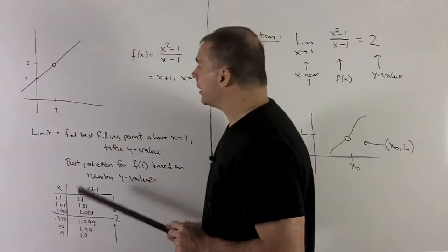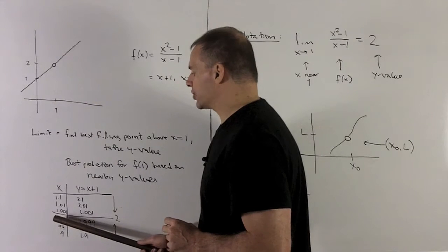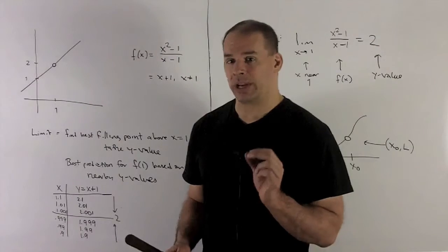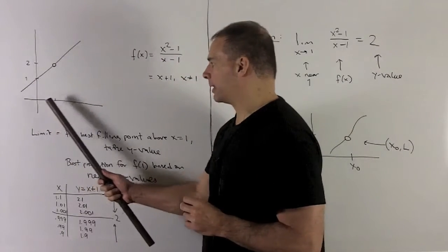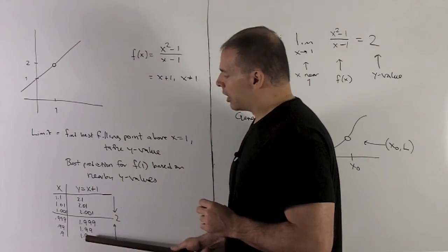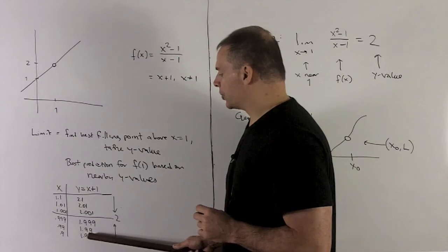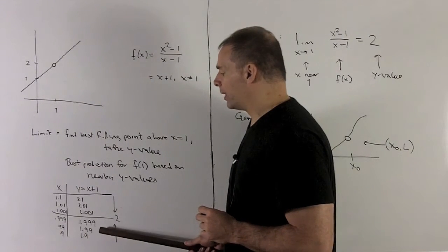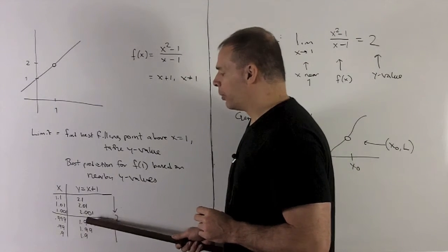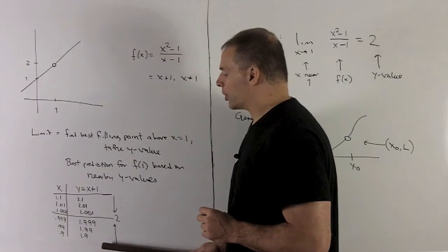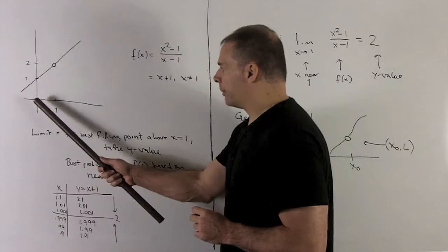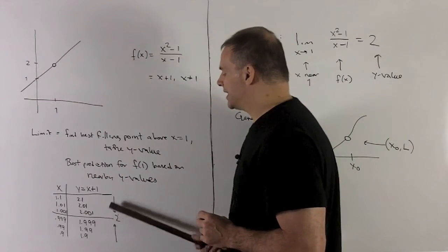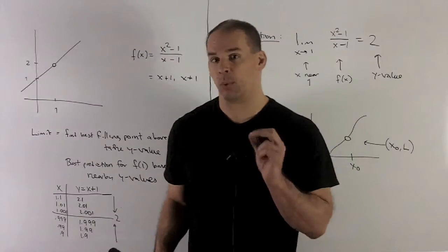On the other side, we get closer to 1. I can start with 0.9, 0.99, 0.999. We're getting closer and closer to 1 as we come in from the left. And then we notice our numbers for y are also getting closer to 2. 1.9, get a little bit better with 1.99, get even better with 1.999. So we're going to 2 as we come in from the left. So 2 is just dying to be the value of f of 1 here.